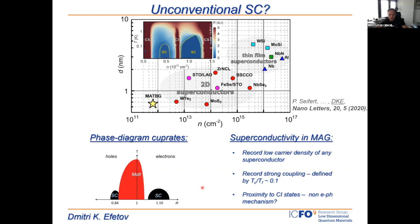Last but not least, the phase diagram naively looks very similar to cuprates, where again we observe superconducting domes upon doping of correlated insulator phases.